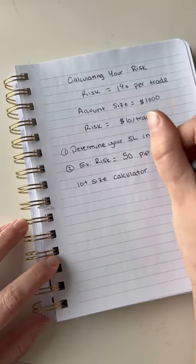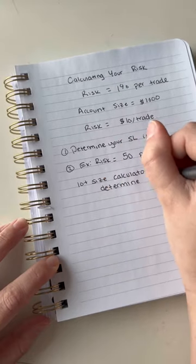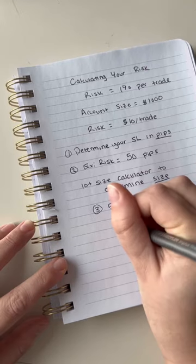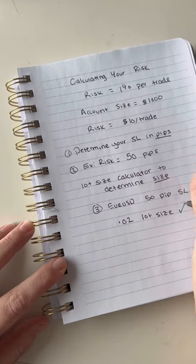You're going to use a lot size calculator and we're going to determine the lot size to use. In this example, using a 50 pip stop loss, that would give us a 0.02 lot size.